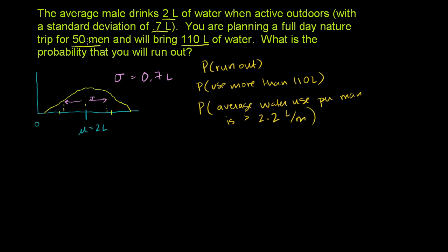We are essentially taking 50 men out of a universal sample. We got data that the average man drinks 2 liters and the standard deviation is 0.7 — perhaps from some huge study giving us the best estimate of population parameters. Now we're sampling 50 men, and we need to figure out the probability that the sample mean is going to be greater than 2.2 liters. To do that, we have to figure out the distribution of the sampling mean — that's the sampling distribution of the sample means — and we know that it's going to be a normal distribution.